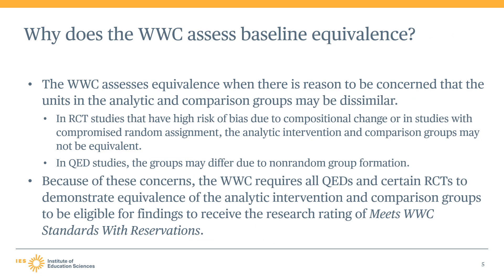The WWC assesses baseline equivalence when there is reason to be concerned that the units in the analytic intervention and comparison groups may be dissimilar. Normally, random assignment gives us confidence that the groups are similar, or equivalent, on observable and unobservable characteristics. But if an RCT has compromised random assignment, or if the RCT has high risk of bias due to compositional change, the intervention and comparison groups used in the analysis may not be equivalent. For QEDs, the groups may differ because the study did not form the groups randomly, so we cannot make any assumptions about the groups' similarity at baseline.